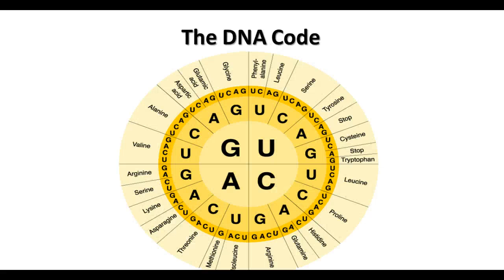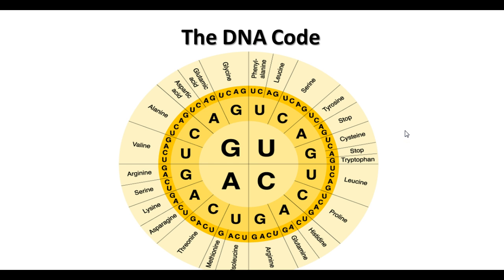One of my favorite charts is this circular one — I find it very easy to read. The first letter is in the interior circle, the second letter is in the middle circle, and the third letter is in the outer circle. So if we're looking for tryptophan: U is the first letter in the codon, G is the second letter, and G is the third letter. So UGG codes for tryptophan, one of the 20 amino acids. Most amino acids have two or more codons that code for them. Tryptophan and methionine have only one each. And then we have our three stop codons shown here.